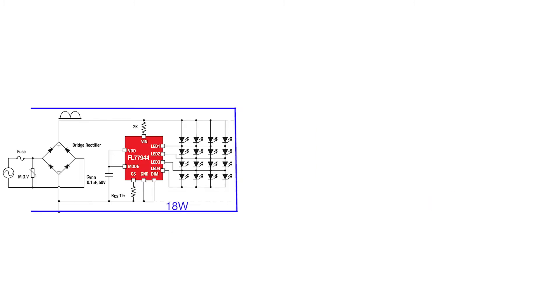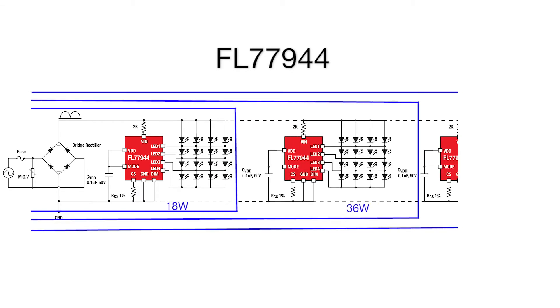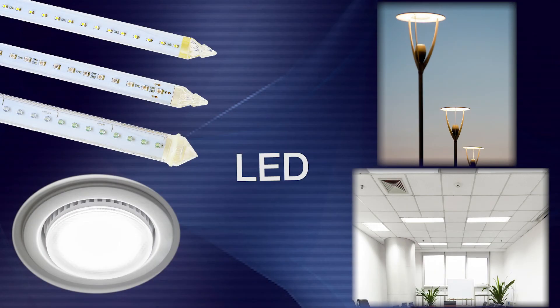Let's look at the wide power range. Here's an 18 watt solution using the FL77944. By simply duplicating the same solution, it can be designed to be higher power. Fairchild's direct AC drive is unique because it can meet many different types of commercial and industrial lighting solutions, such as down lights, troffers, street lights, and tube lighting.